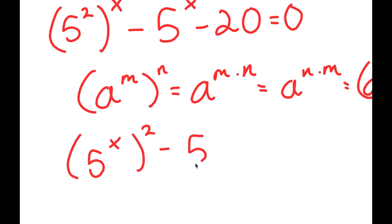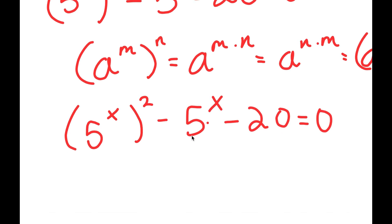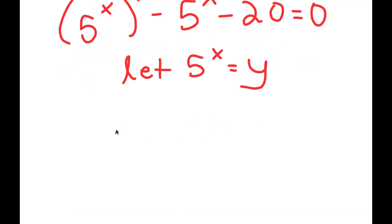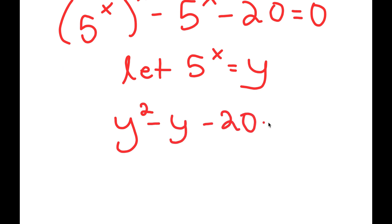Now this minus 5 to the power of x minus 20 is equal to 0. And now I'm going to let 5 to the power of x equal y, so I get y squared minus y minus 20 is equal to 0.